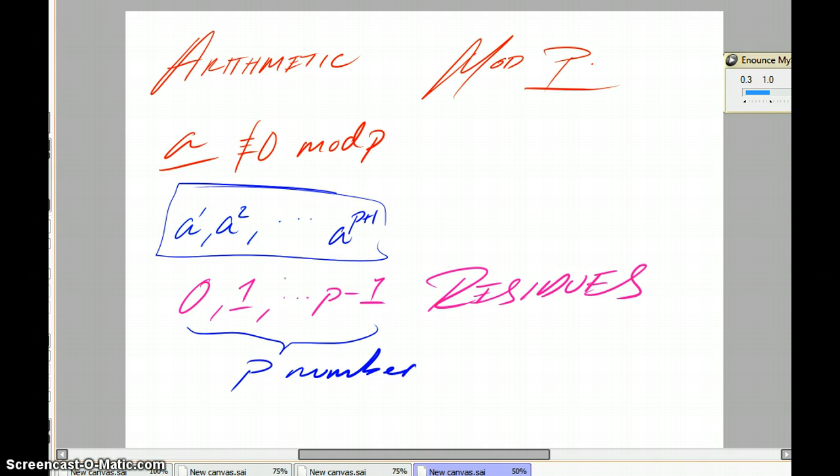So we claim that this sequence repeats. So call the particular elements of the sequence a to the r and a to the s. And if this repeats, we have that a to the r is congruent to a to the s mod p. And what follows is a to the r minus s is congruent to 1 mod p.